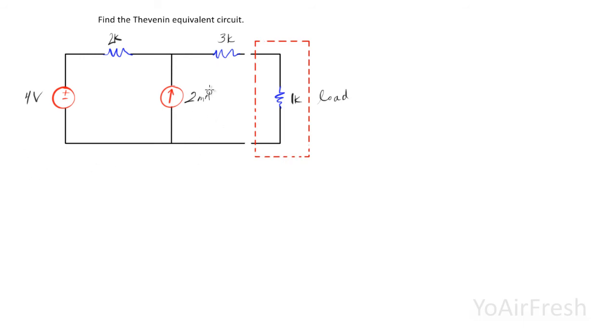So the next step we're going to want to do after identifying and removing the load resistor is to find the Thevenin resistance. And to do that, we're going to redraw the circuit. And for independent sources, the voltage source becomes a short circuit, and the current source will become an open circuit.